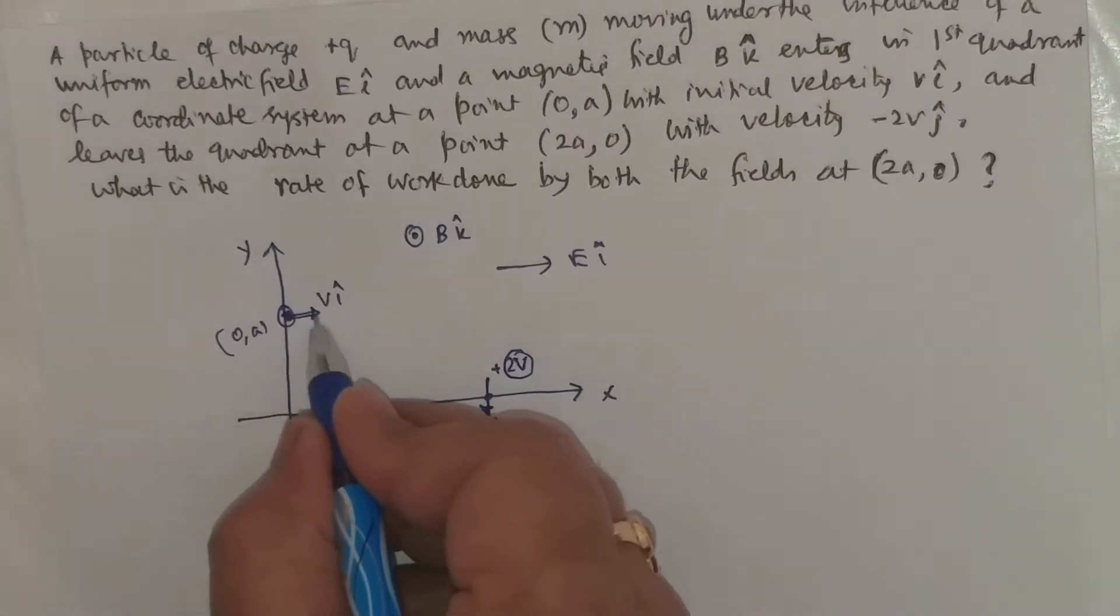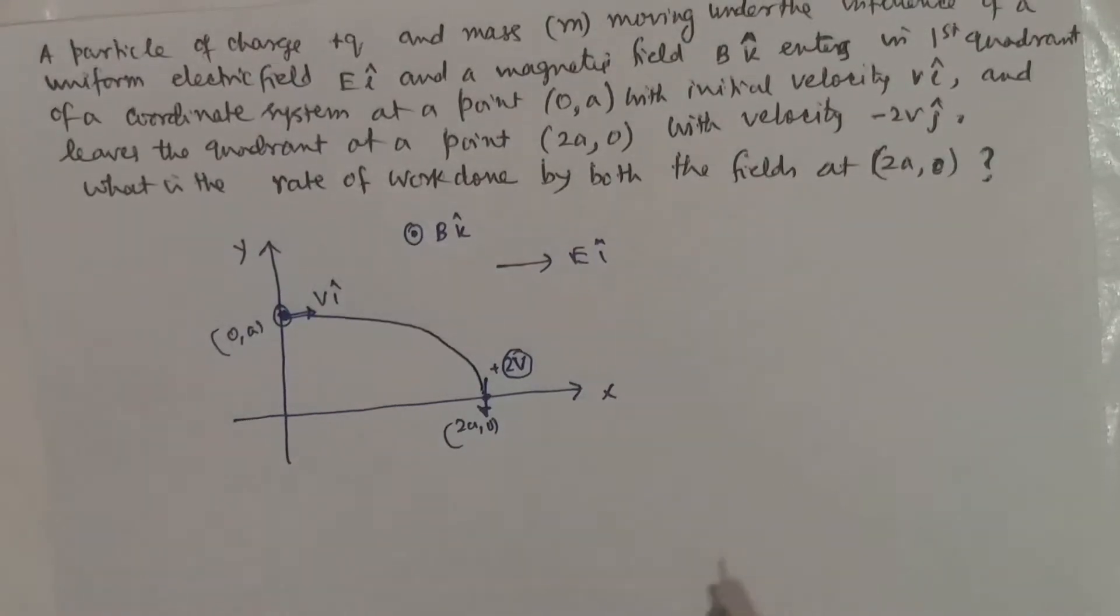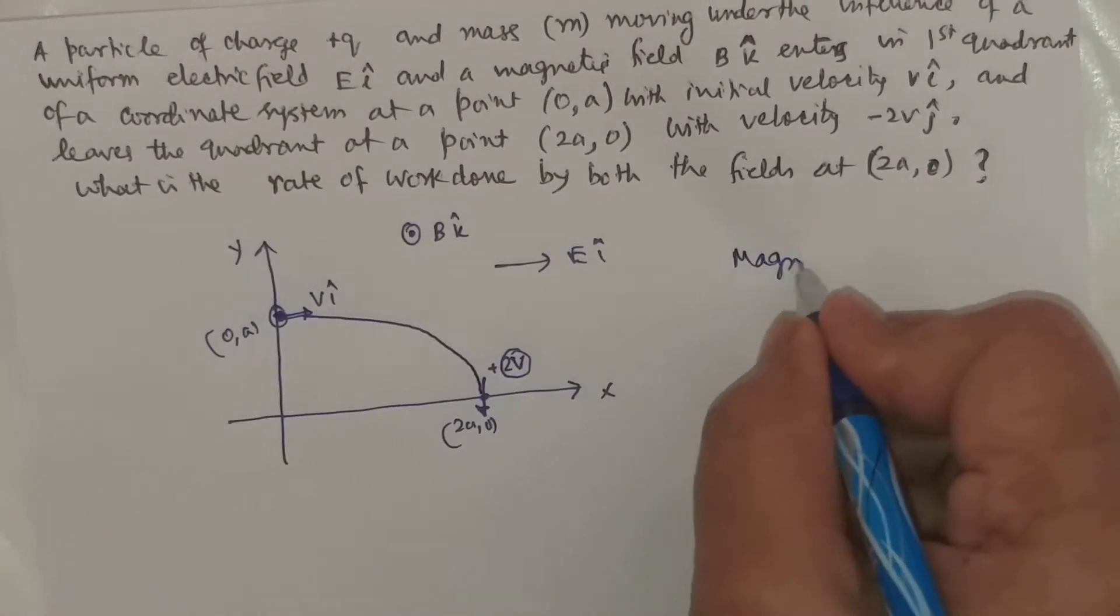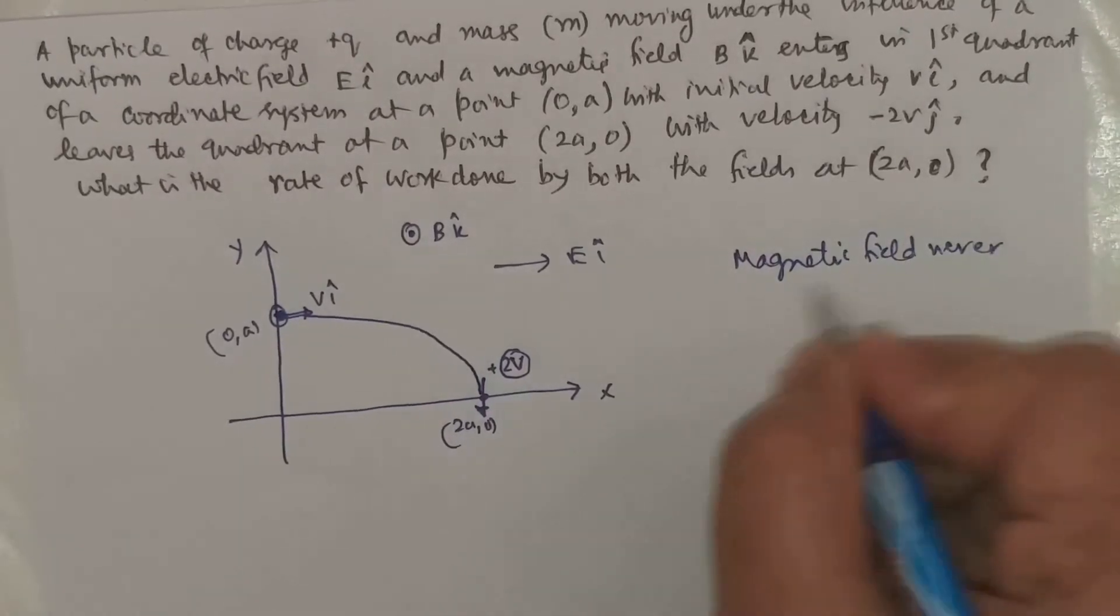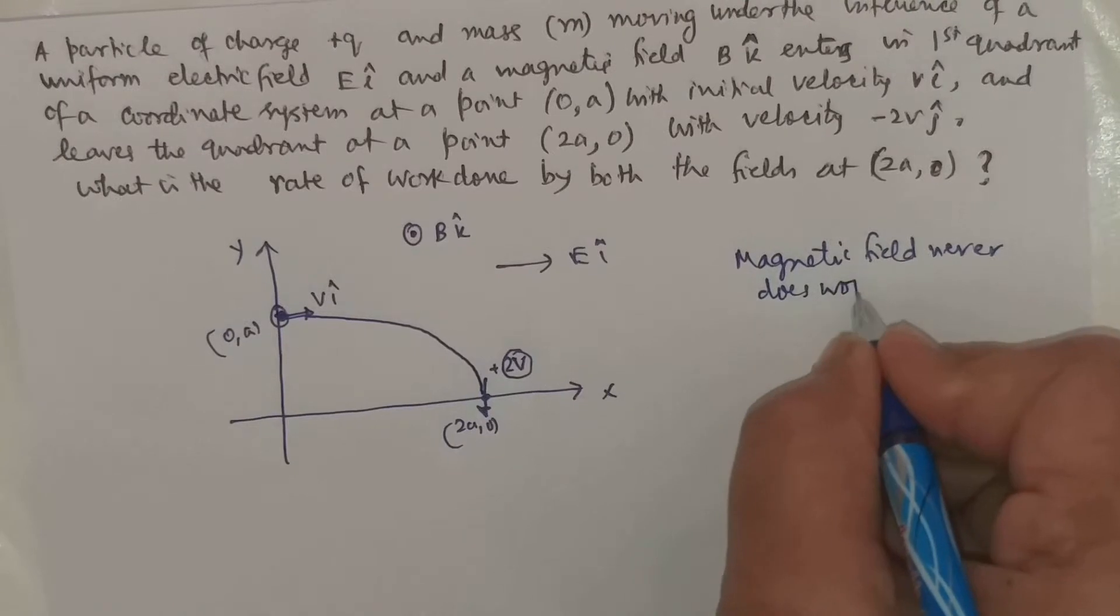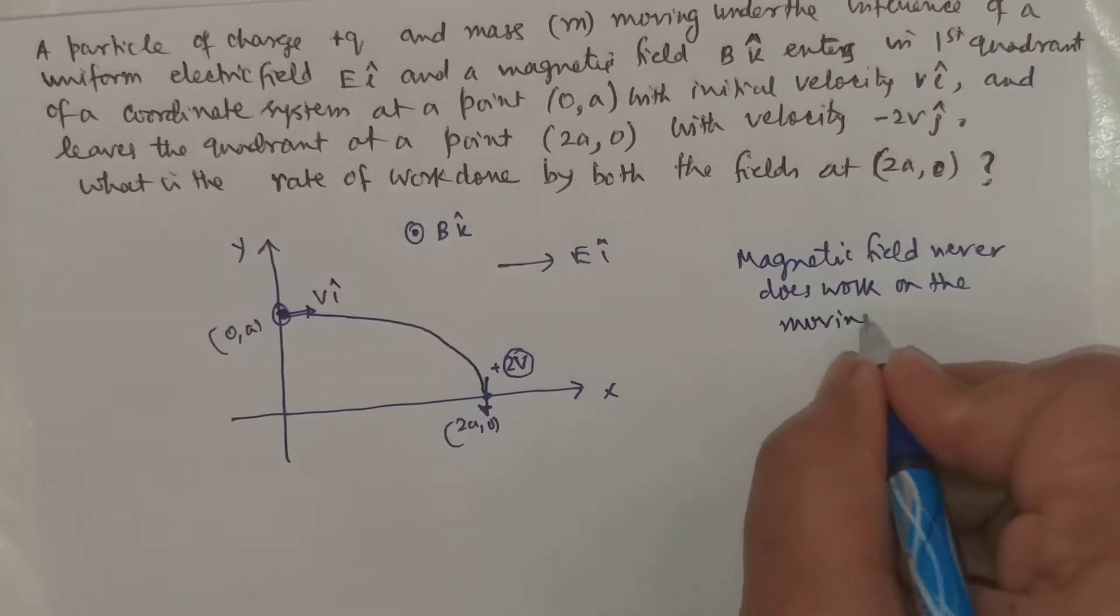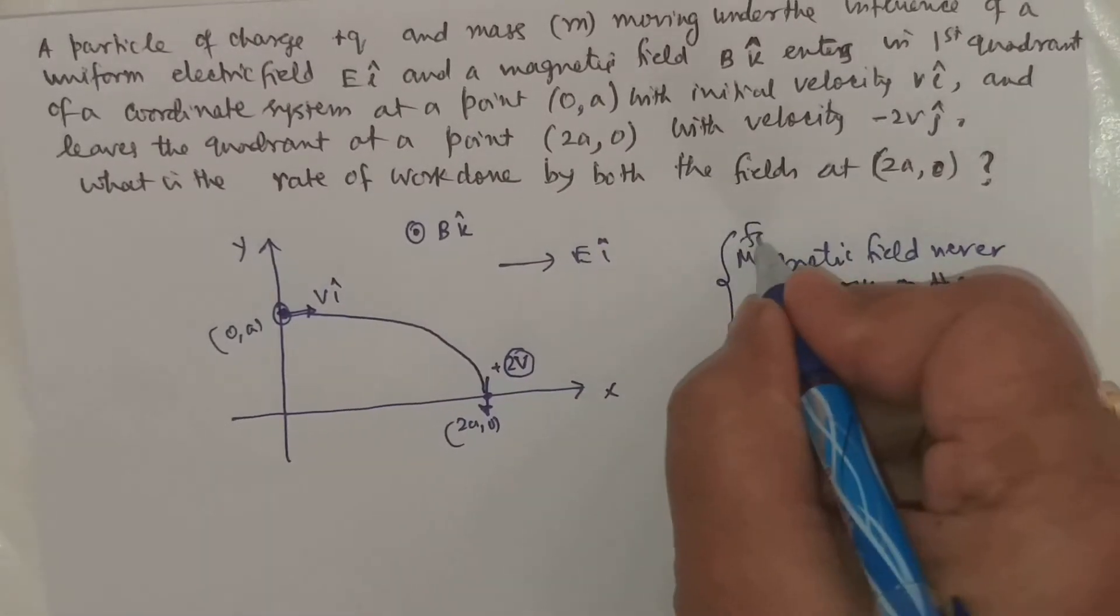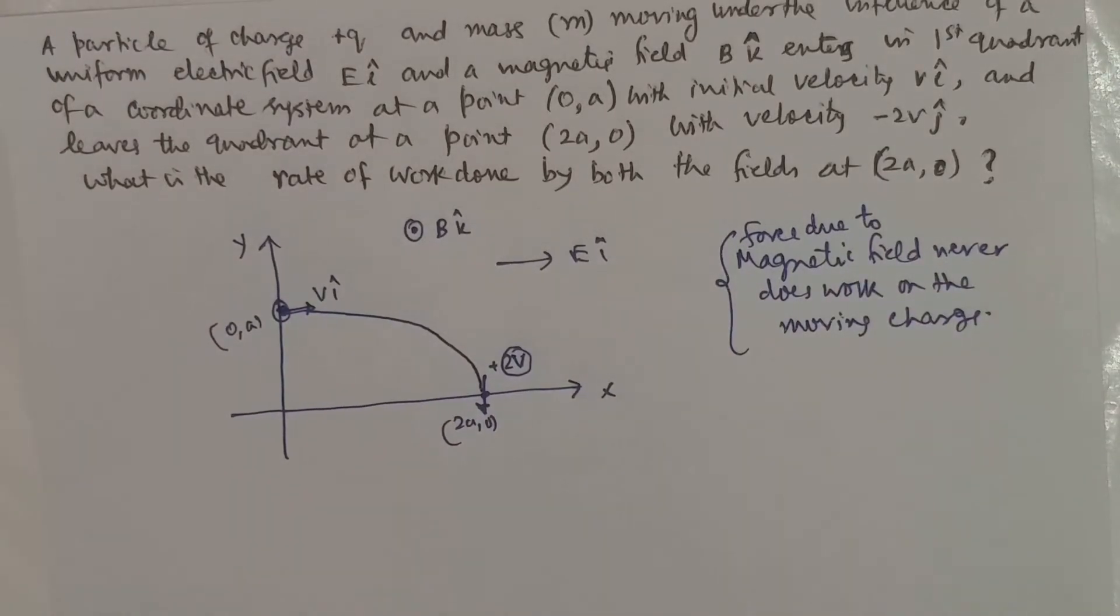Of course, the charge particle might have taken this path. Now, we should note that whatever may be the path, the magnetic field never does work on the moving charge. It can only deviate the moving charge but the force due to magnetic field never does any work on the moving charge.